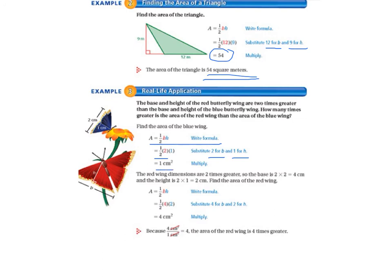The red wing dimensions are 2 times greater, so the base is 2 times 2, which equals 4 centimeters, and the height is 2 times 1, which equals 2 centimeters. Finding the area of the red wing: write the formula, substitute 4 for B and 2 for H. 4 times 2 equals 8, and half of 8 is 4 centimeters squared. Because 4 centimeters squared over 1 centimeter squared equals 4, the area of the red wing is 4 times greater.